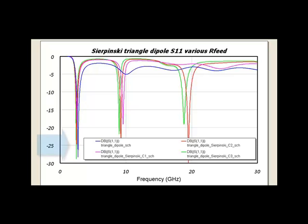If you look at the blue curve, that would be the standard bow tie dipole. And notice with the magenta curve, this would be the first triangle cut out. You'll see there's this higher order resonance going on.